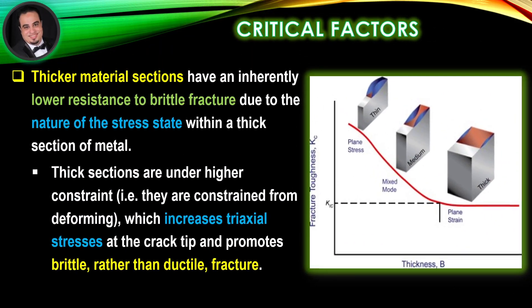As materials get thinner, the amount of material under plane stress decreases, increasing the likelihood of a ductile failure mode. Thicker material sections have an inherently lower resistance to brittle fracture due to the nature of the stress state within a thick section of metal. Thick sections are under higher constraint — they are constrained from deforming — which increases triaxial stresses at the crack tip and promotes brittle rather than ductile fracture.